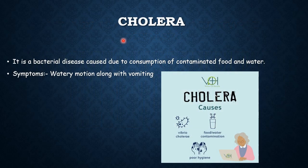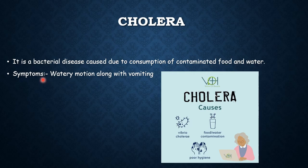The first one is cholera. Cholera is a bacterial disease which is caused due to consumption of contaminated food and water. The symptoms of cholera are watery motion along with vomiting.